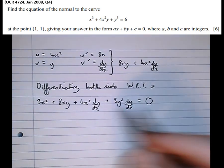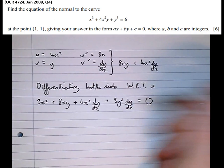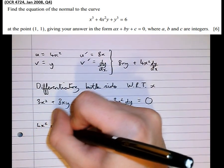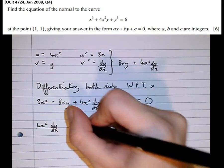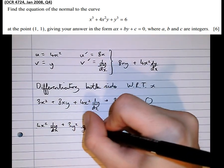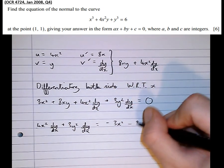Now we're going to take all the non-dy/dx terms over to the right-hand side, to get 4x² dy/dx plus 3y² dy/dx equals minus 3x² minus 8xy.